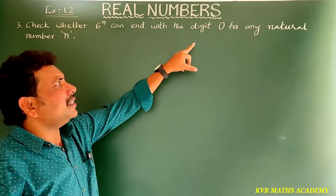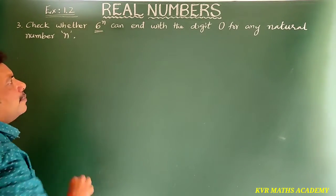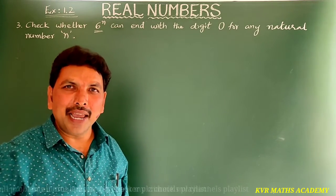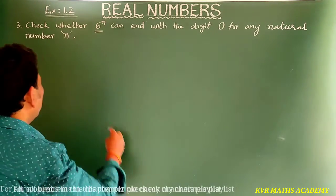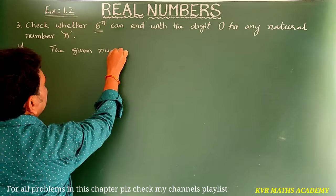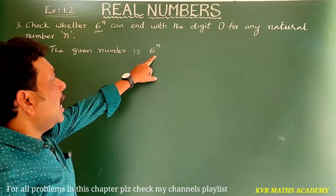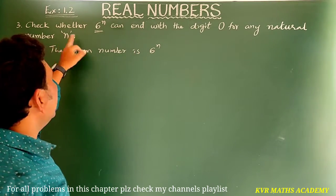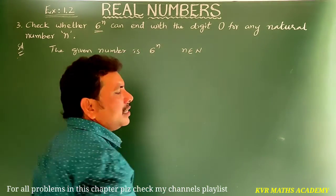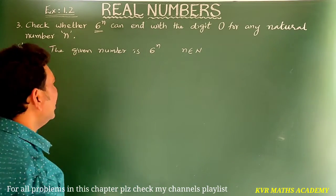Let's do the problems. The third question: check whether 6 power n can end with digit zero for any natural number n. Here n belongs to the natural numbers — 1, 2, 3, 4, and so on.